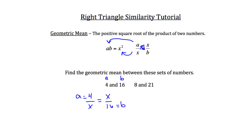Now remember to use your cross product property rule here, so we'll multiply 4 times 16 and we'll get 64, and we'll set that equal to x times x, which is x squared. Now we want to solve for x, so we'll take the square root to get rid of that square, and whatever we do to one side of the equation we do to the other. The square root of 64 is 8, and the square root of x squared is x. So in this case x is equal to 8.